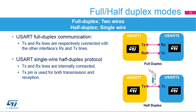The USART can be configured to follow a single-wire half-duplex protocol where the TX and RX lines are internally connected. In this communication mode, only the TX pin is used for both transmission and reception. The TX pin is always released when no data is transmitted, so it acts as a standard I/O in idle or reception modes. This means the I/O must be configured so that the TX pin is configured as an alternate function open drain with an external pull-up.